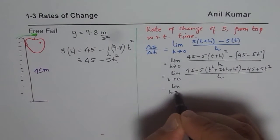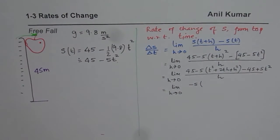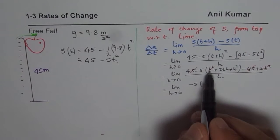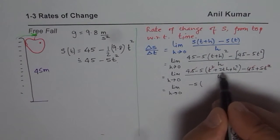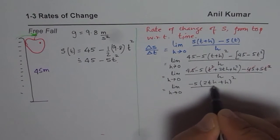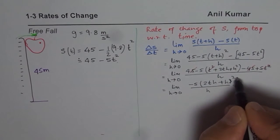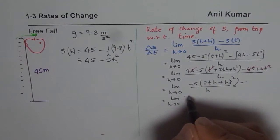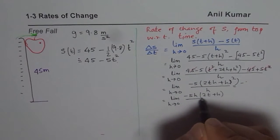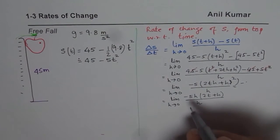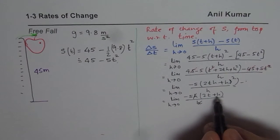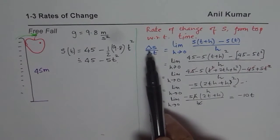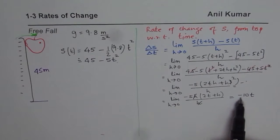What we are left with is the limit as h approaches 0 of minus 5 times (2th + h²) over h. Factoring h out of the bracket gives: limit as h approaches 0 of minus 5h(2t + h) over h. The h cancels, and substituting h = 0 gives minus 5 times 2t, which equals minus 10t. So the rate of change of height is minus 10t.